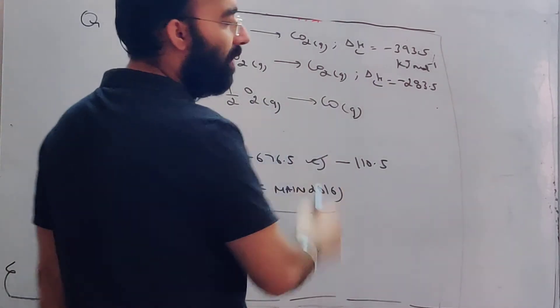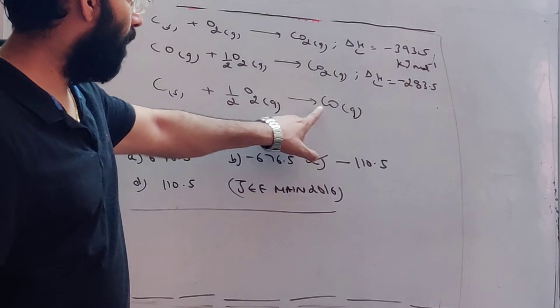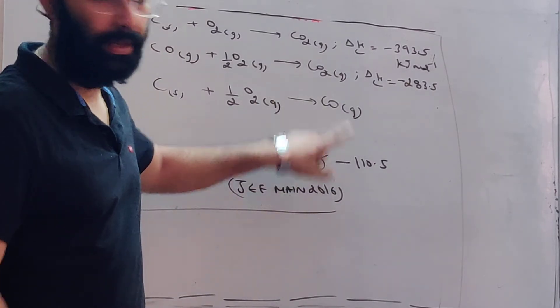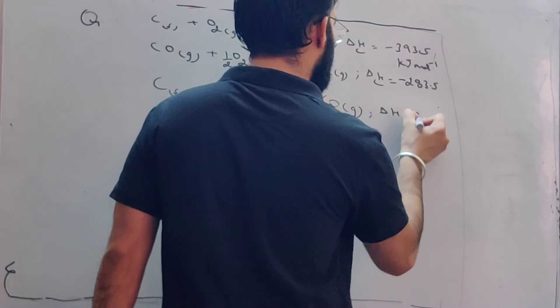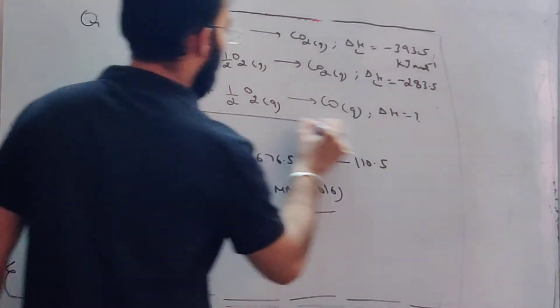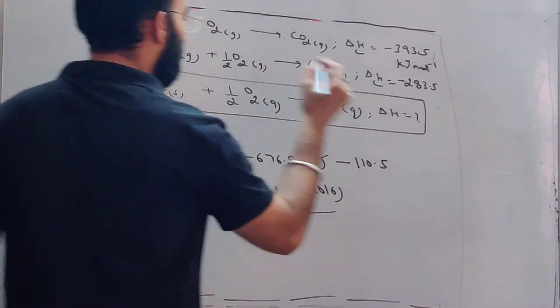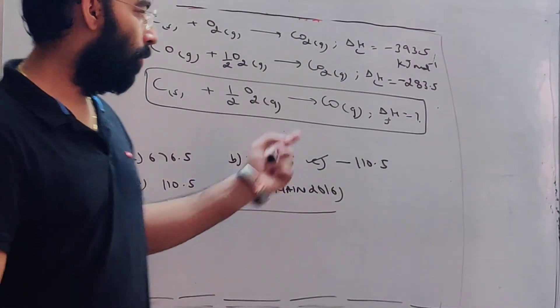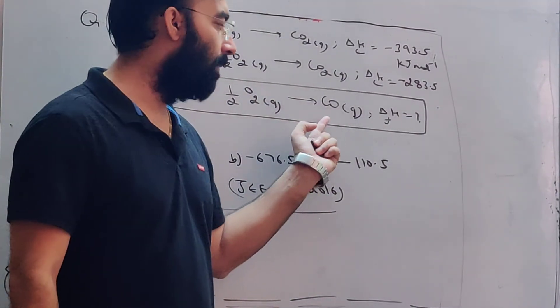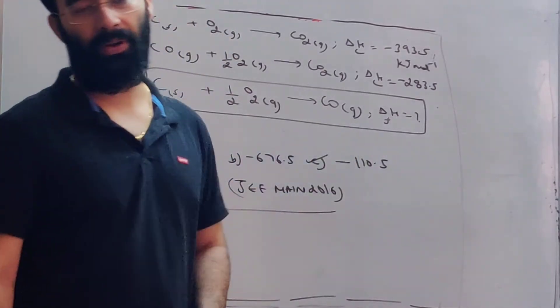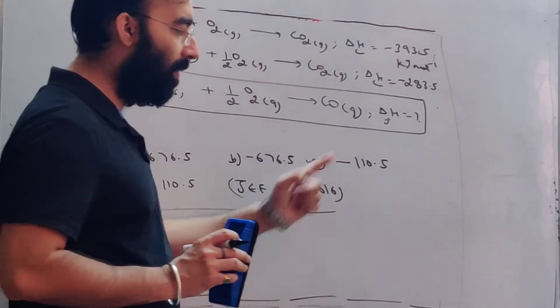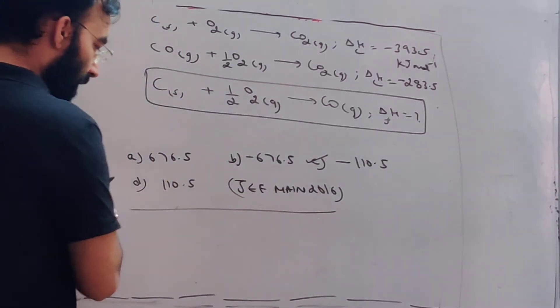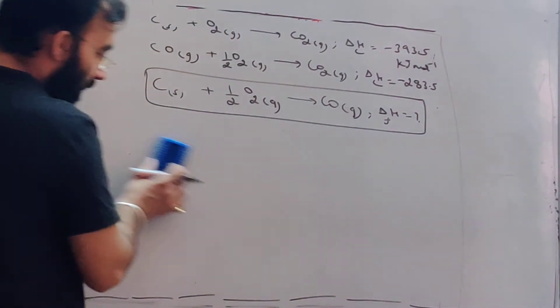This reaction is depicting the formation of carbon monoxide, right? And here in this reaction, the enthalpy change will be called the enthalpy of formation of carbon monoxide. Now let's see how we have reached here. The answer is 110.5.